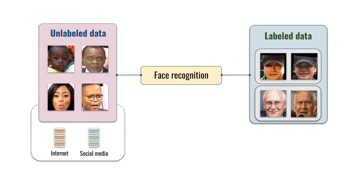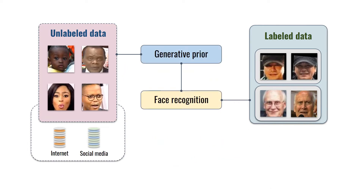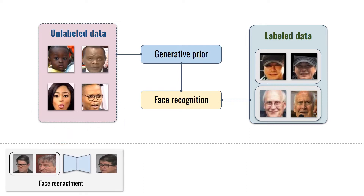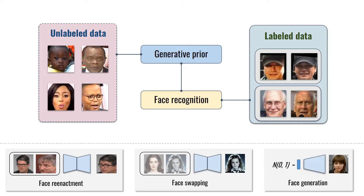Virtually infinite amounts of faces without labels can be gathered from social media. A number of works find a way to create artificial identities from this data by augmentation-based procedures. Instead, our idea relies on learning a generative prior on the unlabeled data for subsequent face recognition training. This paradigm follows the self-supervised learning approach, which requires a pretext task to be solved to learn the prior.